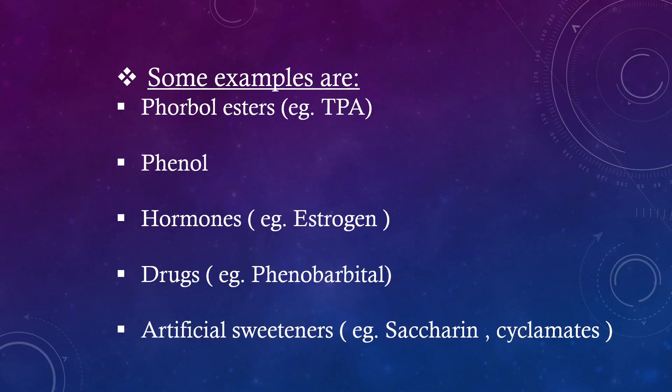Some examples of promoters are: phorbol esters, example TPA; phenol; hormones, example estrogen; drugs, example phenobarbital; and artificial sweeteners, example saccharine and cyclamates.